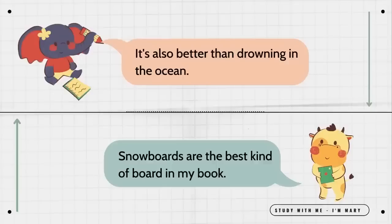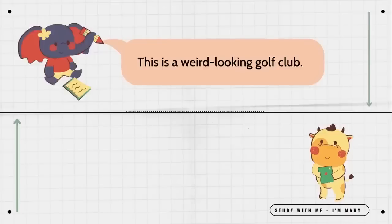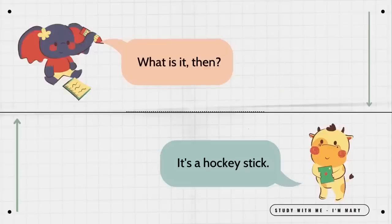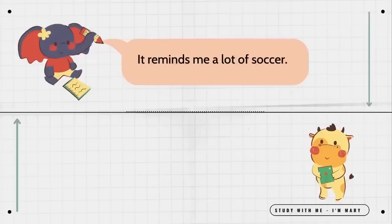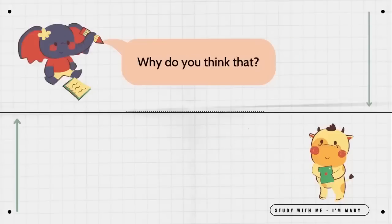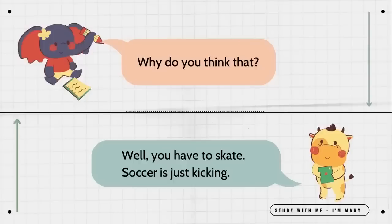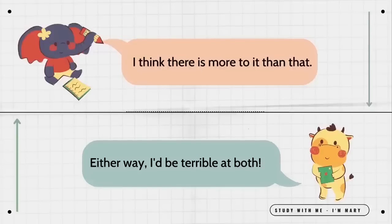This is a weird-looking golf club. That's not a golf club. What is it then? It's a hockey stick. Is hockey the game the men play on ice? Yes it is. It's a difficult game. It reminds me a lot of soccer. I think hockey is more difficult than soccer. Why do you think that? Well, you have to skate. Soccer is just kicking. I think there is more to it than that. Either way, I'd be terrible at both.